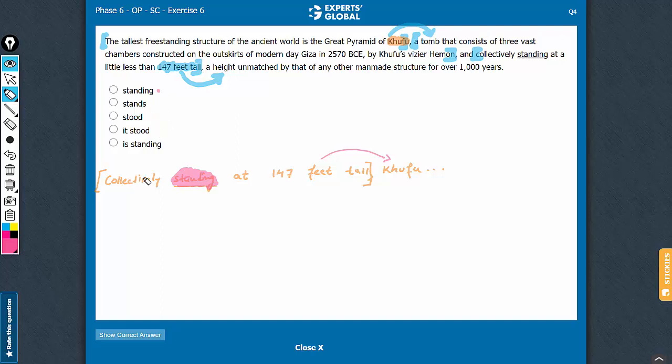Try stands. Collectively stands at 147 feet tall, Khufu. That doesn't make sense. Collectively stood at 147 feet tall. Doesn't make sense. And this changes the tense also. So, one more flaw here.